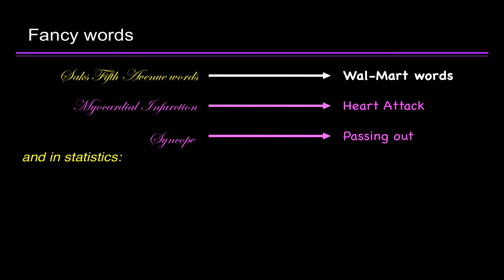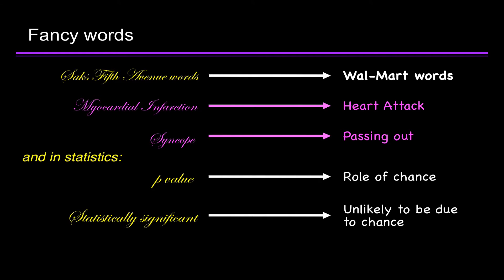In our last video, I encouraged you to translate fancy words. I suggested that a p-value was best thought of as simply the role of chance, and the phrase statistically significant could be translated to unlikely to be due to chance. Here's a new phrase: 95% confidence interval. I'd like you to think about that as the margin of error.